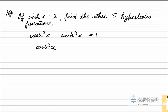This gives us cosh squared x minus 4 is equal to 1. As sinh x is equal to 2, this is sinh x all squared, 2 squared is 4. Rearrange for cosh squared x, that will be equal to 5.